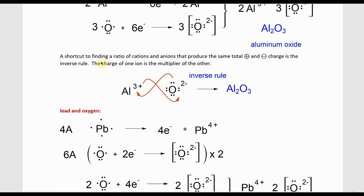A shortcut to finding the ratio of cations and anions that produces equal total positive and negative charge is called the inverse rule: the charge of one ion is written as the multiplier of the other. Using this rule, we would write Al₂O₃.